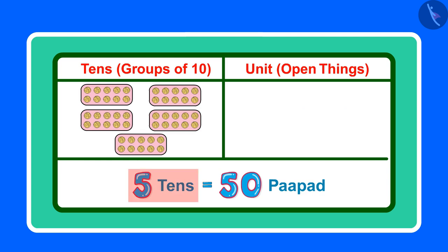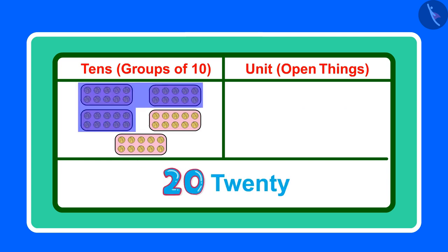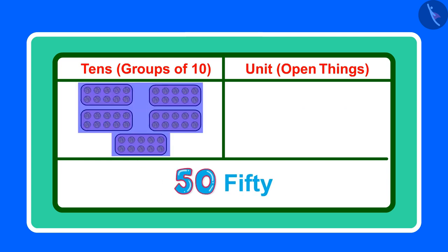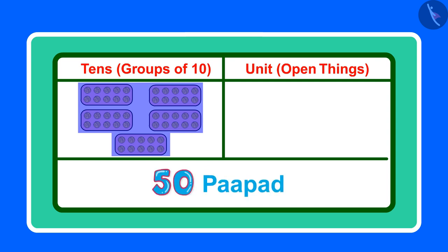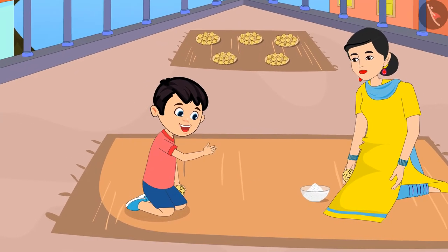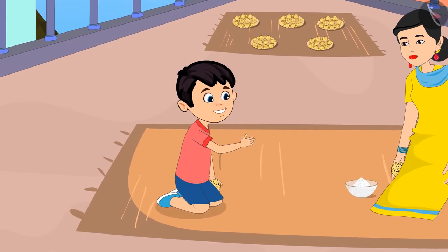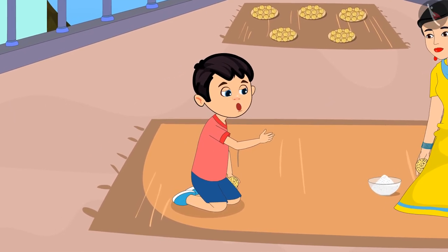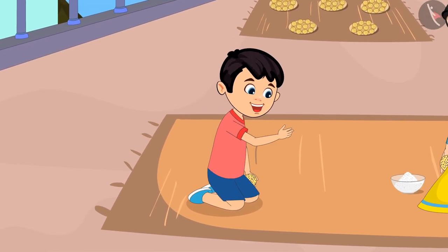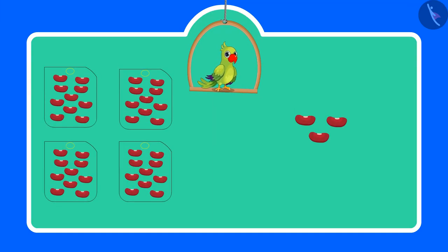So counting in tens: 10, 20, 30, 40, 50. In total, there are 50 papad. Chotu says: Alright, now I have understood, mother. These are 50 papad and not 15.